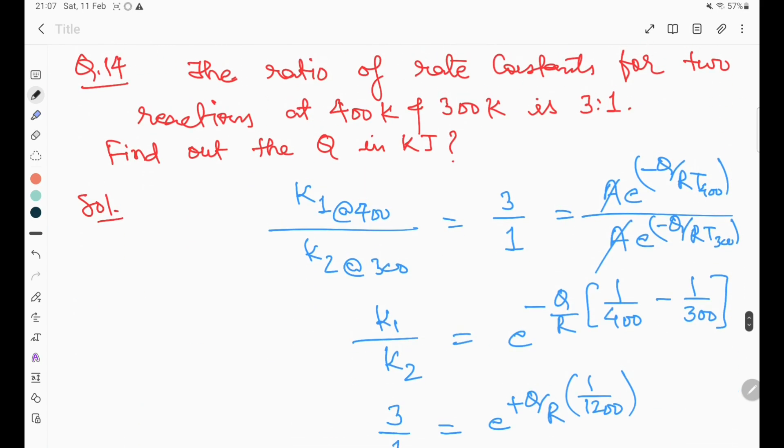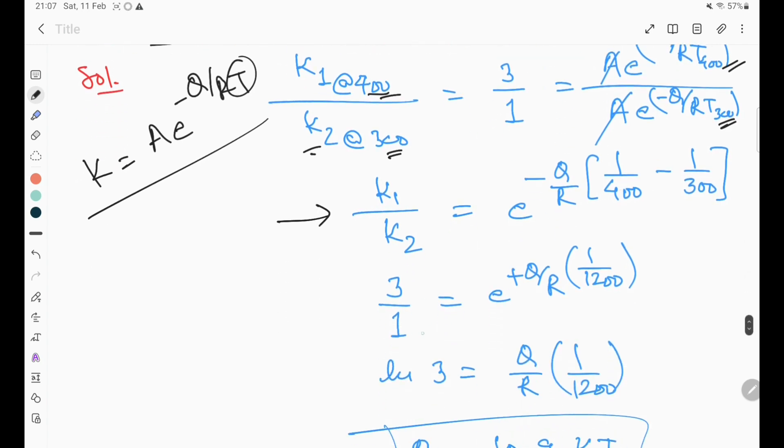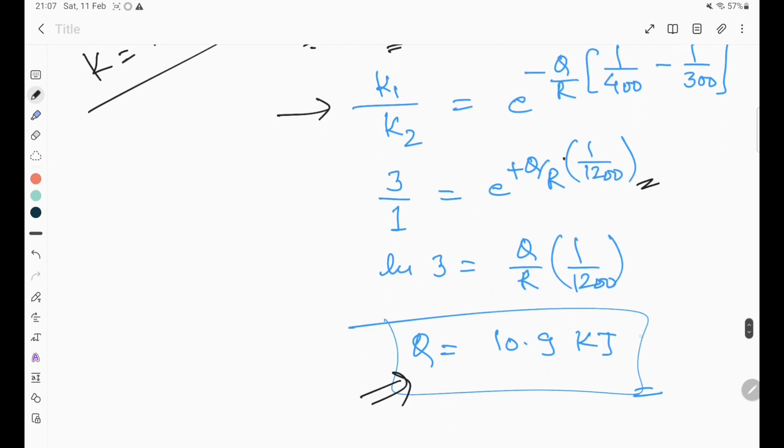Question number fourteen: the ratio of rate constants for two reactions at 400 Kelvin and 300 Kelvin is three to one. Find out the activation energy in kilojoules. The relation is K1 at 400 and K2 at 300 equals 3:1. The equation is K equals A e to the power minus Q by RT. For different temperatures, we have A e to the power minus Q by R times 400 and A e to the power minus Q by R times 300. K1 by K2 equals e to the power minus Q by R times (1/400 minus 1/300). This gives 3/1 equals e to the power minus Q by R, so Q equals 10.9 kilojoules, which is the right answer.